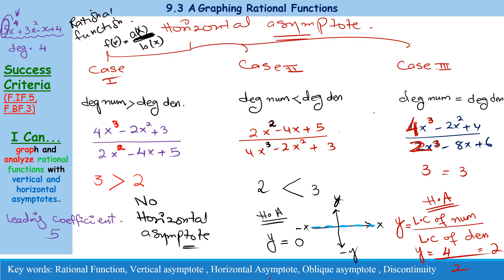If you want to draw this: on the y-axis at the value 2, draw a horizontal dotted line. The graph will not touch this horizontal line — it will come close to it but never touch it. Let's now study these cases one by one and understand the concepts by looking at examples.